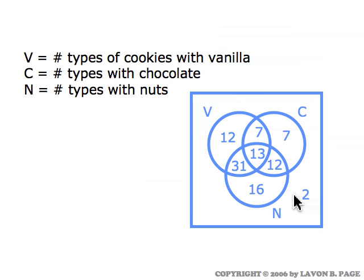You might start by putting all this information into a Venn diagram — a V circle for the vanilla types, a C circle for the types that require chocolate, an N circle for the types that require nuts. If you fill in all the information into the Venn diagram, it should look as shown here. Pause the video, go back and check all that data, and make sure you agree that it's consistent with the Venn diagram we're looking at now.